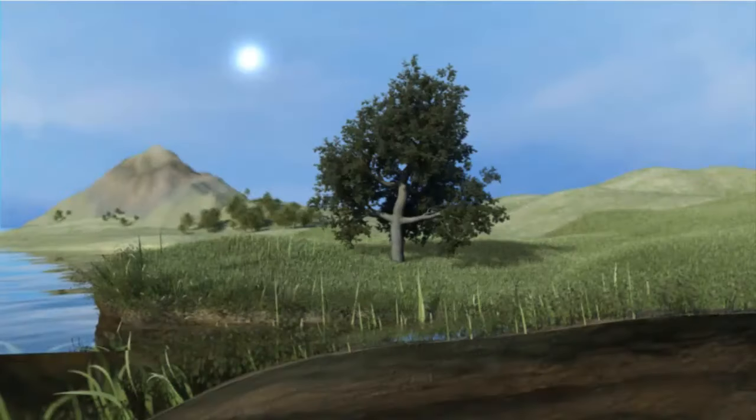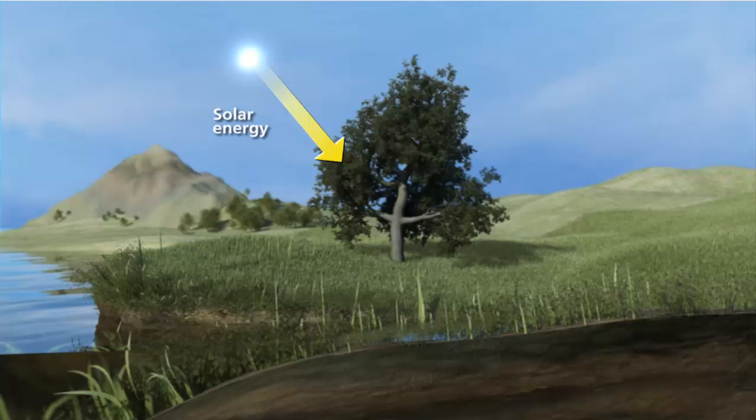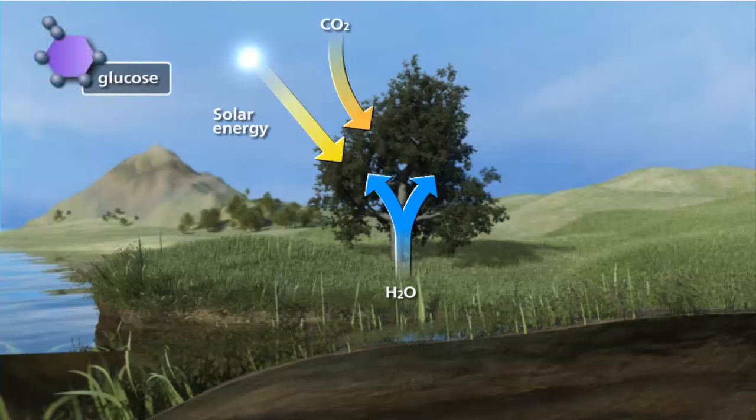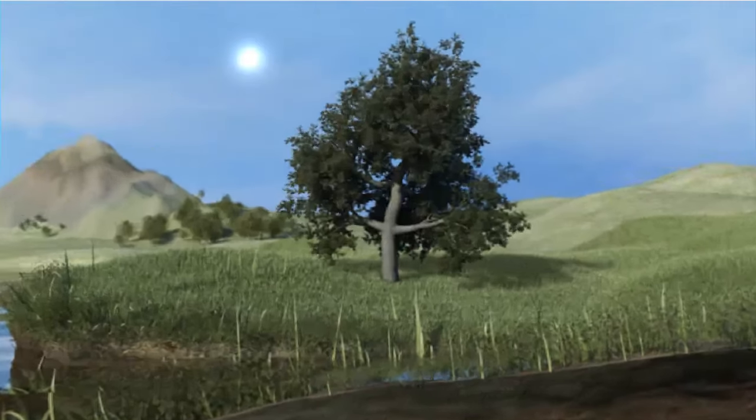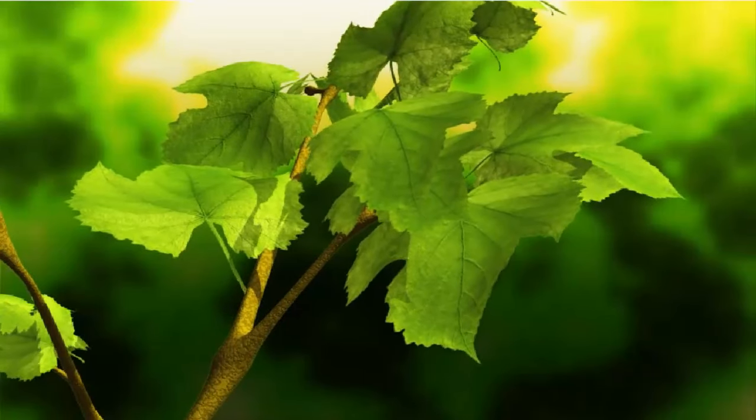Through photosynthesis, photosynthetic autotrophs use energy from the sun to combine carbon dioxide from the atmosphere and water from the soil to form carbohydrates such as glucose. Oxygen is released as a byproduct of photosynthesis. This is where we will start to track the passage of carbon through the carbon cycle.